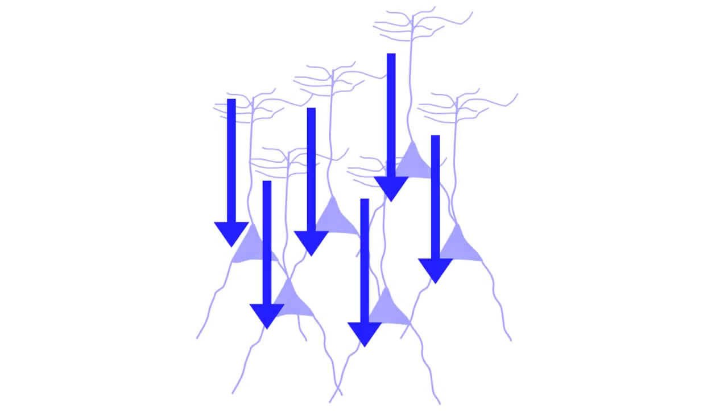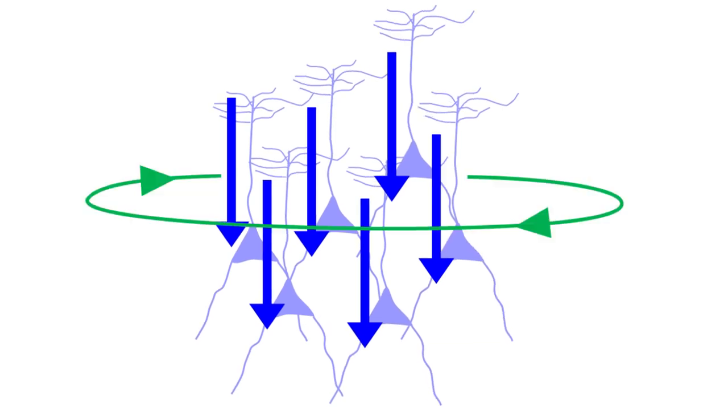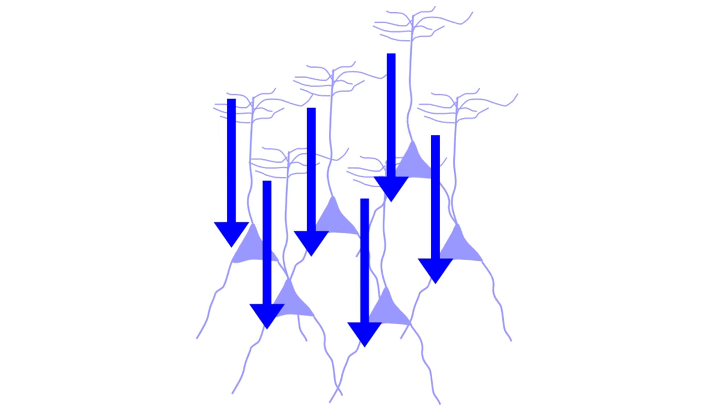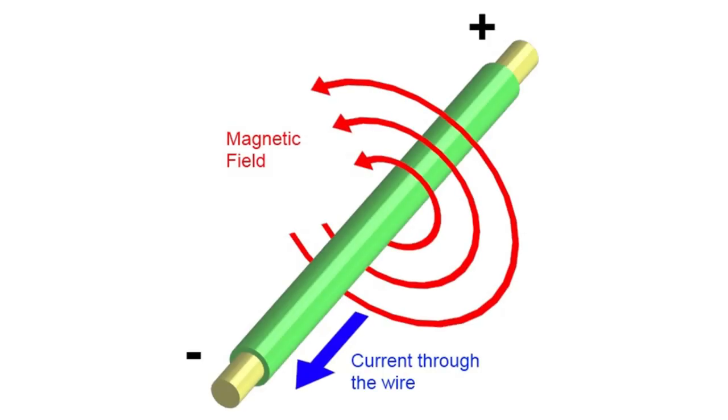But once we have a cortical patch with enough neurons firing at about the same time and generating currents that have a similar orientation, a measurable electrical current will be generated. With MEG, we can measure the magnetic field that goes together with this electrical current. Specifically, we know from Maxwell's right-hand rule that a magnetic field curves around the axis of the electrical current.